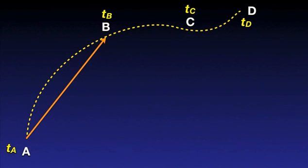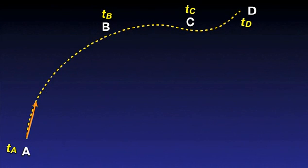We can continue this process by taking the final position closer and closer to the initial position. The corresponding time interval gets shorter and shorter. As the final position considered in our calculations gets closer and closer to the initial starting point, the difference between the average speed and the magnitude of average velocity decreases, as the difference between the distance along the path and the displacement in a straight line gets smaller and smaller. It's not hard to imagine that for a very small time interval, there is almost no difference between the value of the average speed and the magnitude of average velocity.